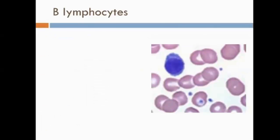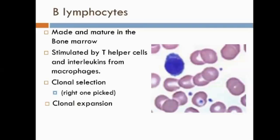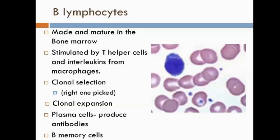Moving on to B cells — the other type of lymphocyte. They are made and mature in the bone marrow; B cells, bone marrow. Once stimulated by T helper cells, they undergo clonal selection. Interleukins also stimulate B cell production, as mentioned when discussing macrophage secretions. Two types of B lymphocyte are produced after clonal expansion by mitosis: plasma cells and memory cells. B memory cells remain in the blood for several years so that, if infection happens again, the antibodies produced by plasma cells can be generated much more quickly and the infection fought off before causing too much damage.